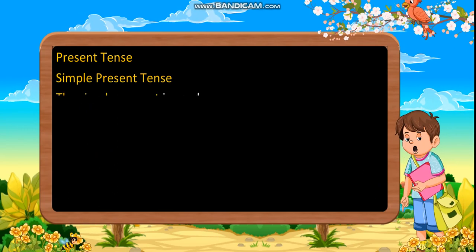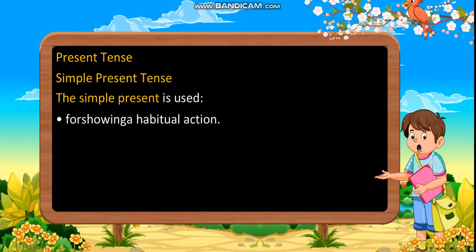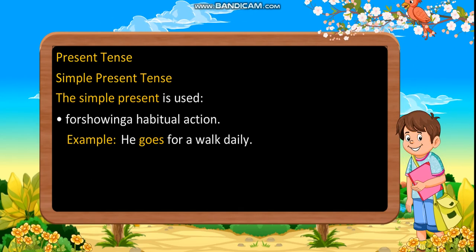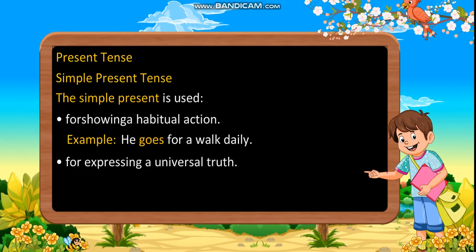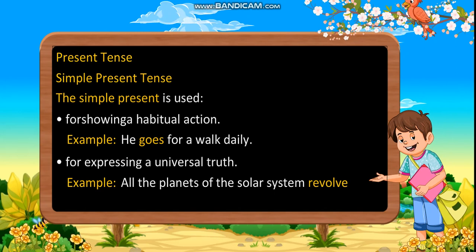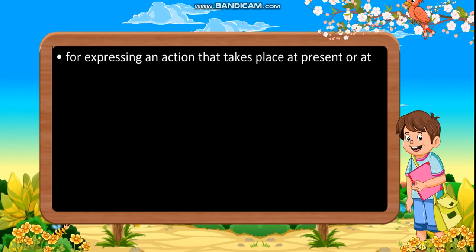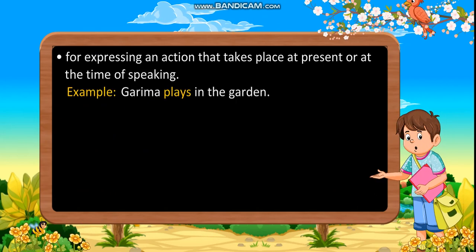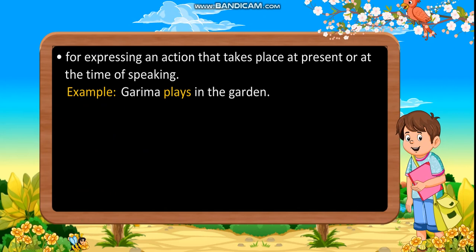Simple present tense: The simple present is used first for showing a habitual action. Example: He goes for a walk daily. For expressing a universal truth. Example: All the planets of the solar system revolve around the Sun. For expressing an action that takes place at present or at the time of speaking. Example: Garima plays in the garden.